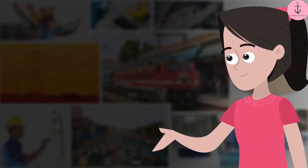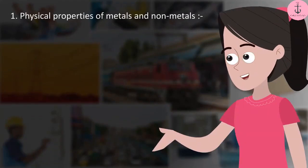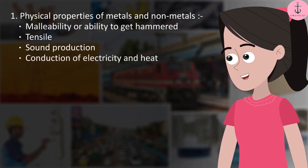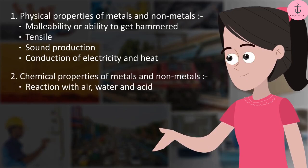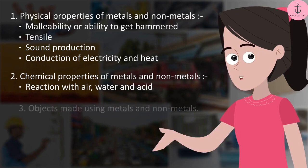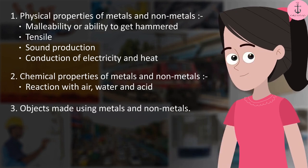Today we learnt the following: Physical properties of metals and non-metals — malleability or ability to get hammered, tensile, sound production, conduction of electricity and heat. Chemical properties of metals and non-metals — reaction with air, water and acid. Objects made using metals and non-metals.